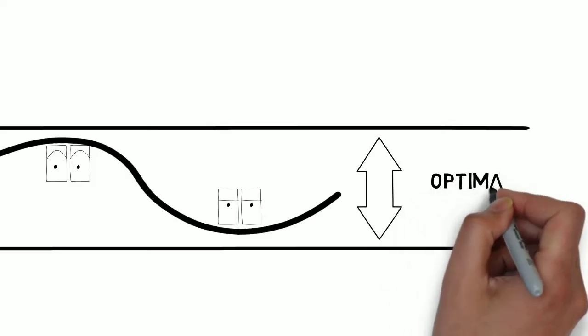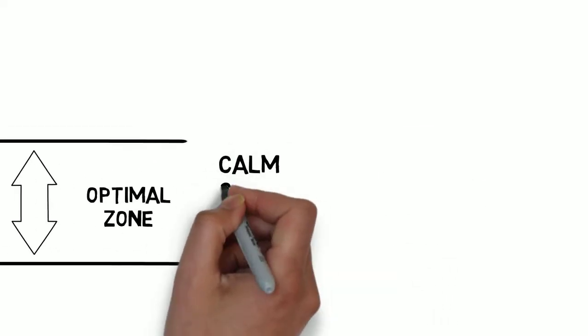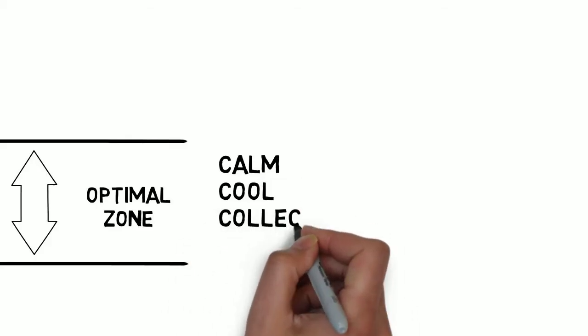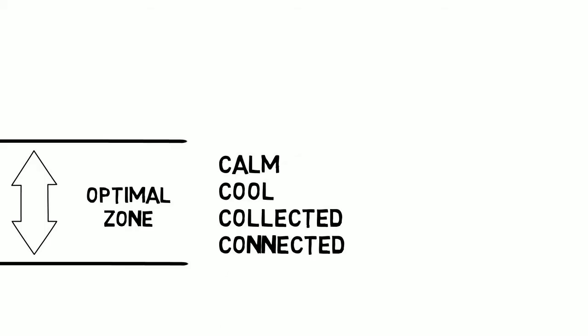This area is what we call someone's optimal zone. Here, people are able to balance and regulate the emotions coming up for them in ways that are calm, cool, collected, and connected. They are able to encounter stressing or difficult situations and manage their emotions.